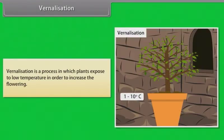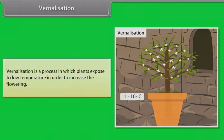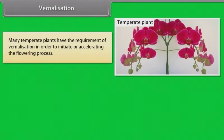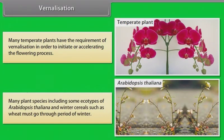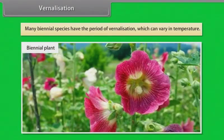Vernalization. Vernalization is a process in which plants are exposed to low temperature in order to increase the flowering. Many temperate plants have the requirement of vernalization in order to initiate or accelerate the flowering process. Many plant species include some ecotypes of Arabidopsis thaliana and winter cereals such as wheat must go through period of winter. Many biennial species have the period of vernalization which can vary in temperature.